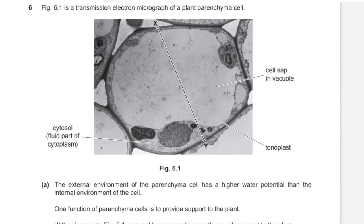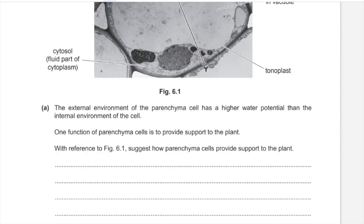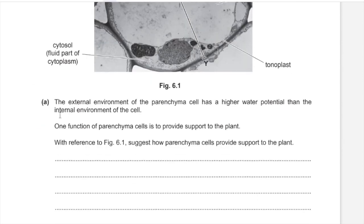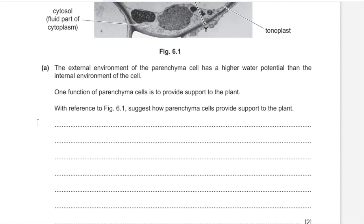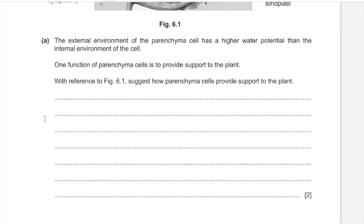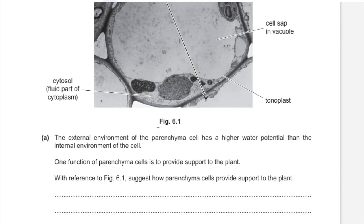Figure 6.1 is a transmission electron micrograph of a plant parenchyma cell. The external environment has a higher water potential than the internal environment due to solutes in the vacuole. One function of parenchyma cells is to provide support through turgor pressure. Water moves into the cell by osmosis, the vacuole fills with water and exerts pressure on the cell walls, providing turgor pressure which supports the plant.